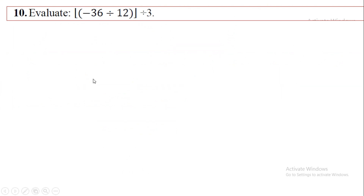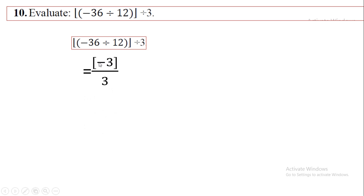Next, for minus 36 divided by 12, all divided by 3: first divide within the bracket — 36 divided by 12 equals 3. So we get minus 3 divided by 3. Then 3 divided by 3 equals 1, and the minus sign remains. So the answer is minus 1.